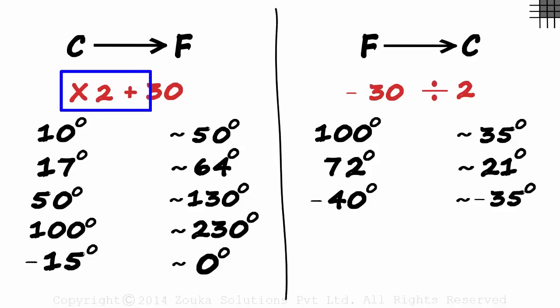And as Celsius is a smaller number, we subtract 30 and divide by 2. One good way to remember this is that C comes before F. So C is smaller than F.